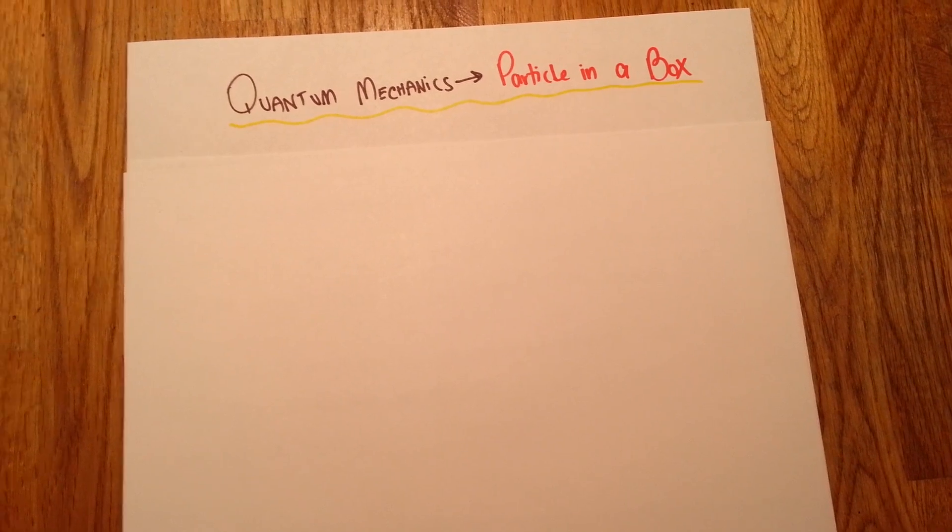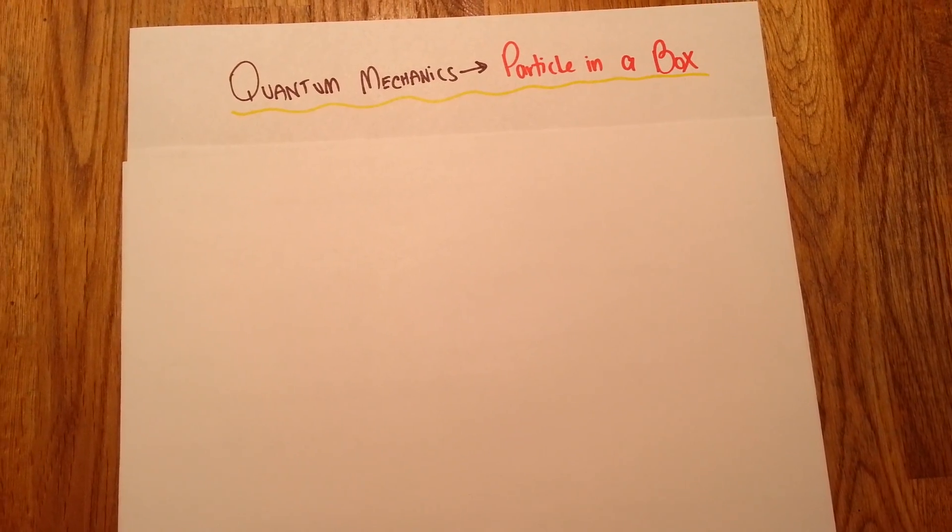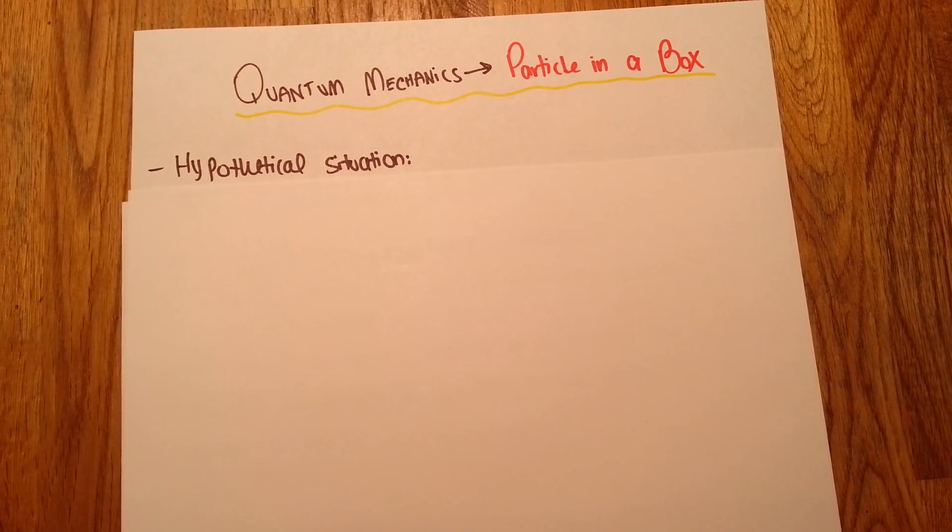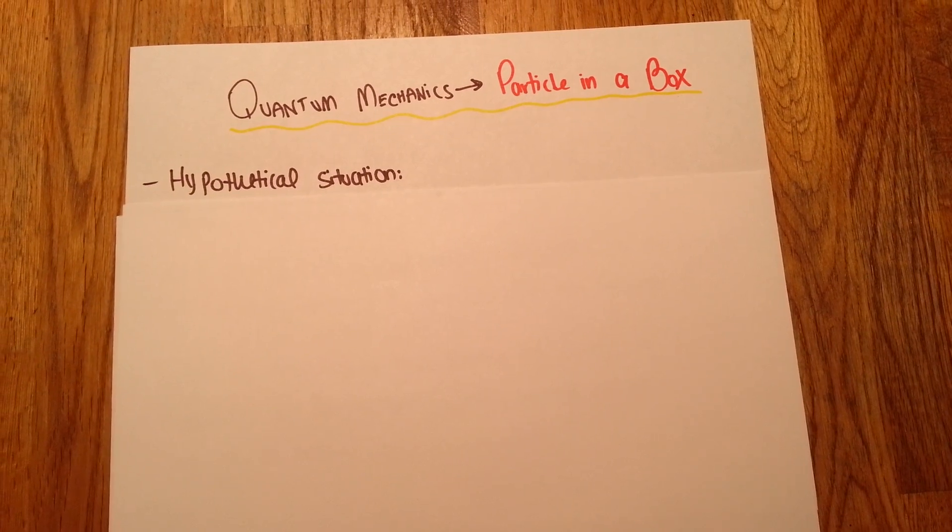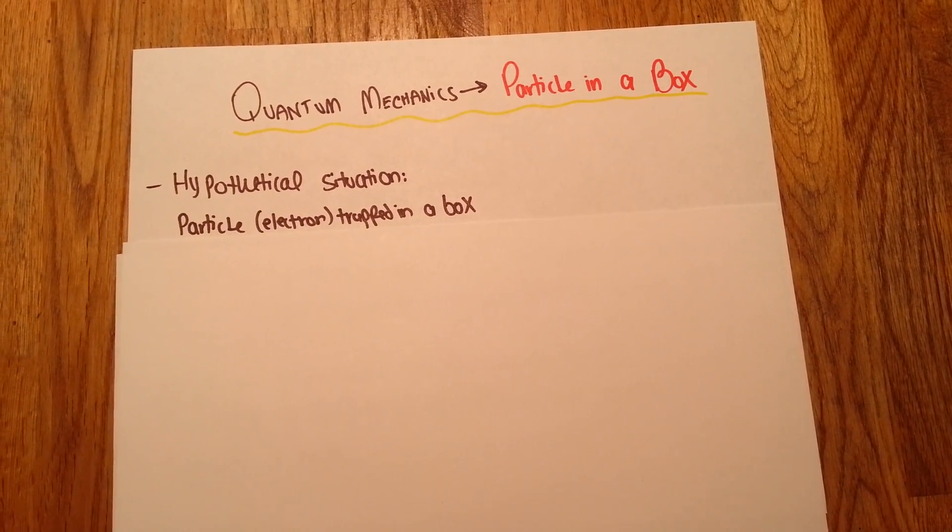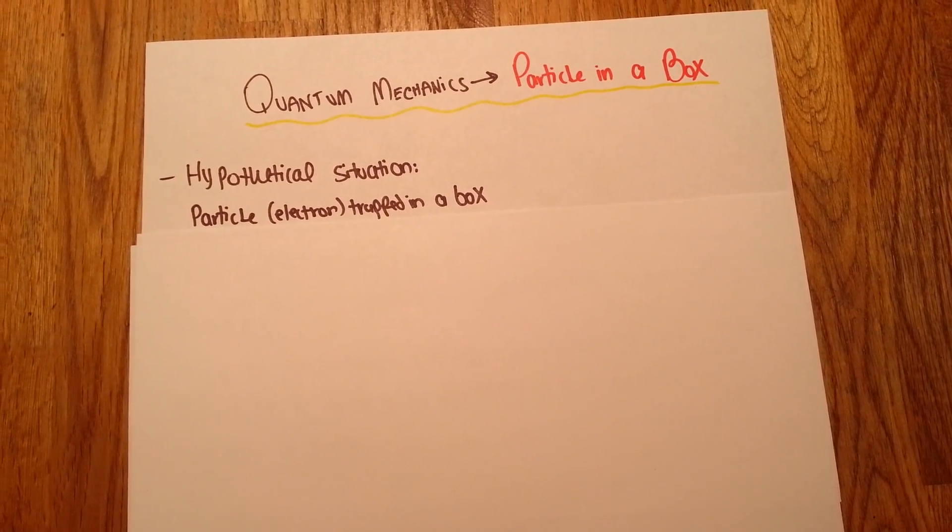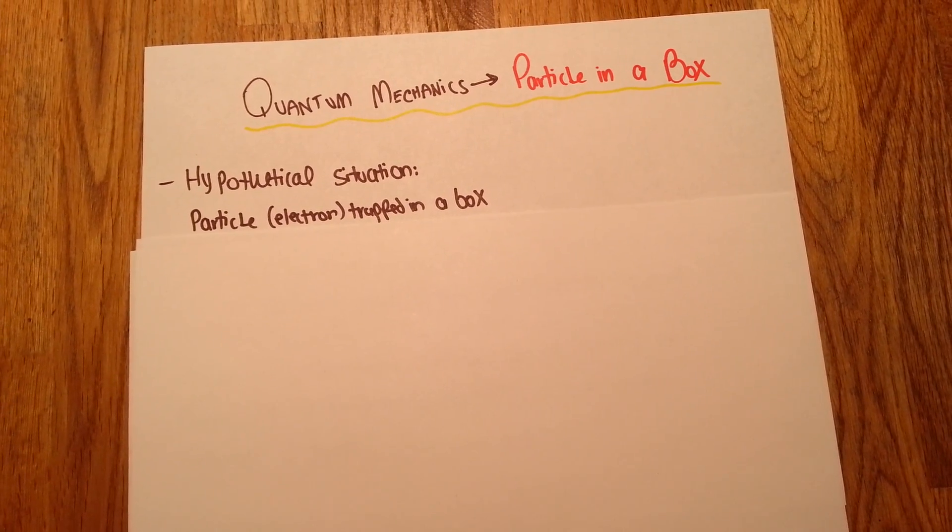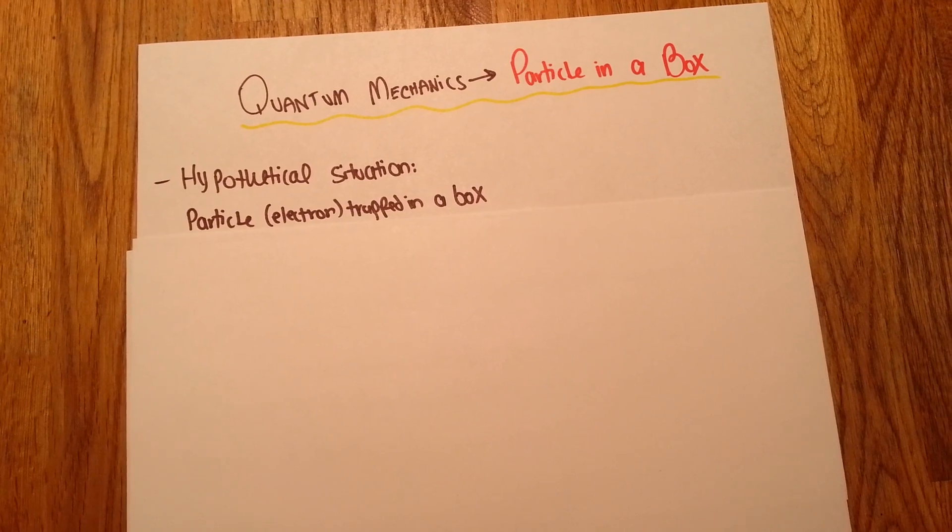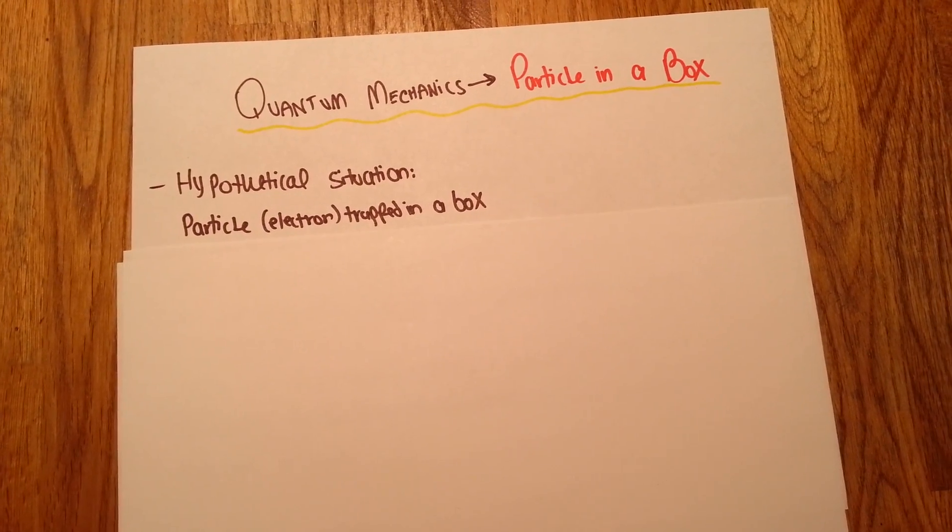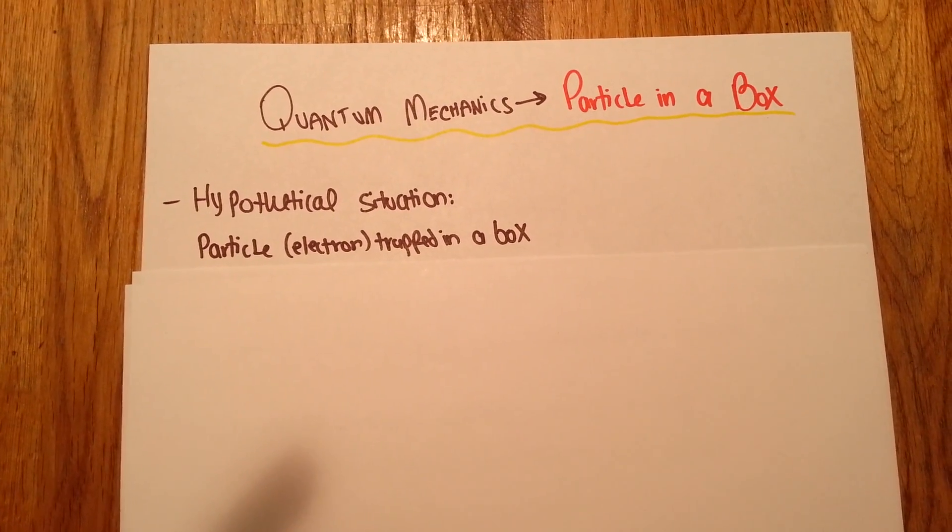First let's familiarize ourselves with what is the particle in the box problem. First of all, it's a hypothetical situation in which we have a particle which is usually an electron, and it's trapped in a box with very high ends so the particle can't escape.